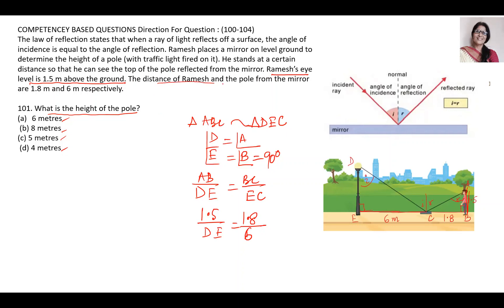The distance of Ramesh and the pole from the mirror: mirror is 1.8, so mirror is at C. Ramesh is at 1.8 distance, and the pole is from the mirror at 6 meter distance.